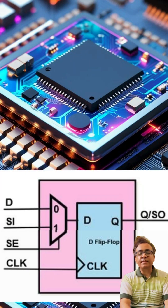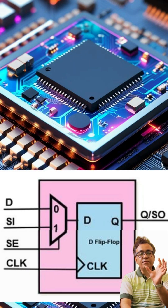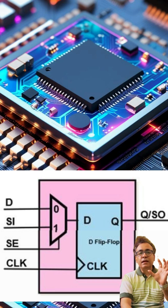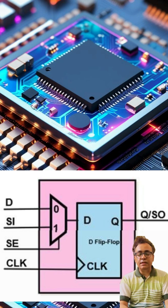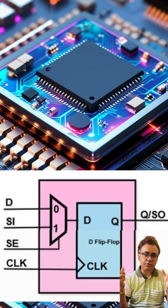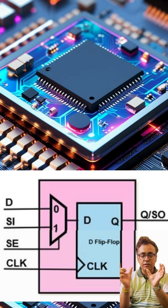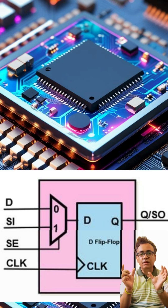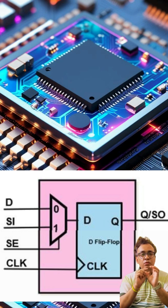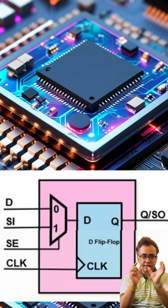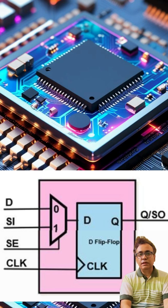Scan flip-flop is basically used in design for testability, which we call DFT. It consists of a D flip-flop as well as a two-to-one multiplexer. In total, it has four inputs and one output: a data input, a clock input, a scan enable input, and a scan-in input.